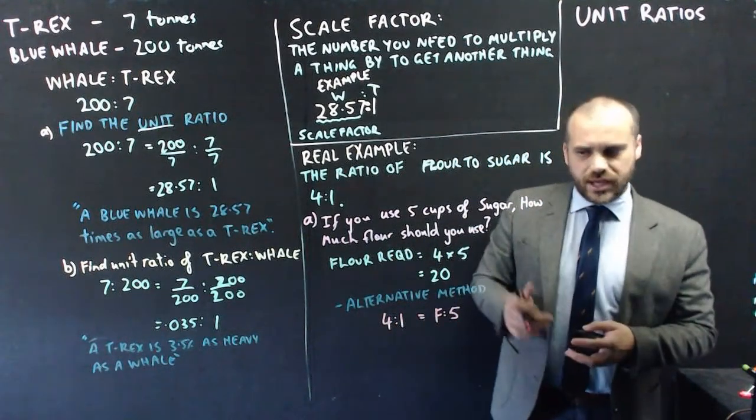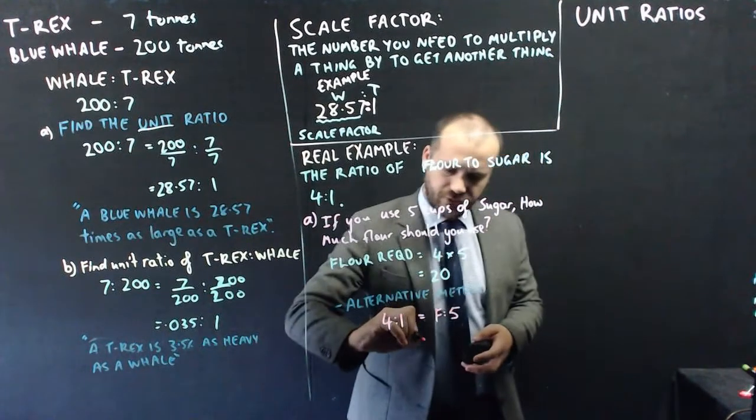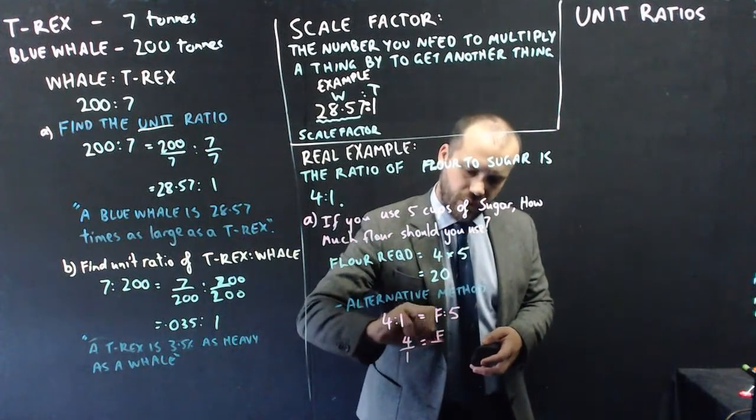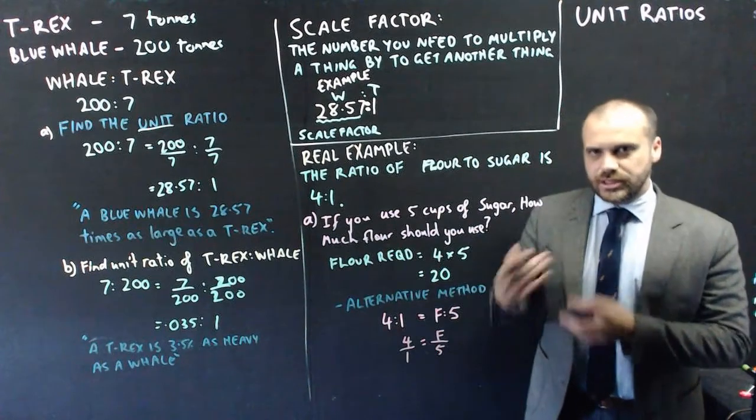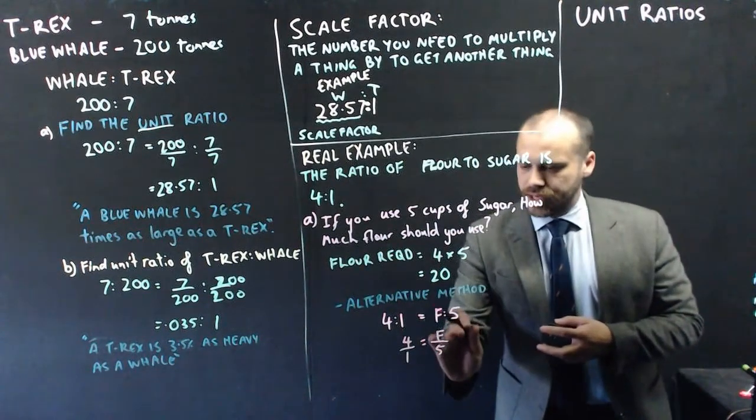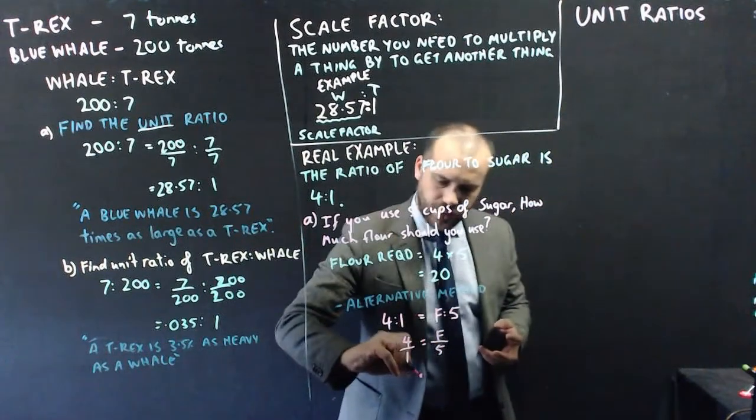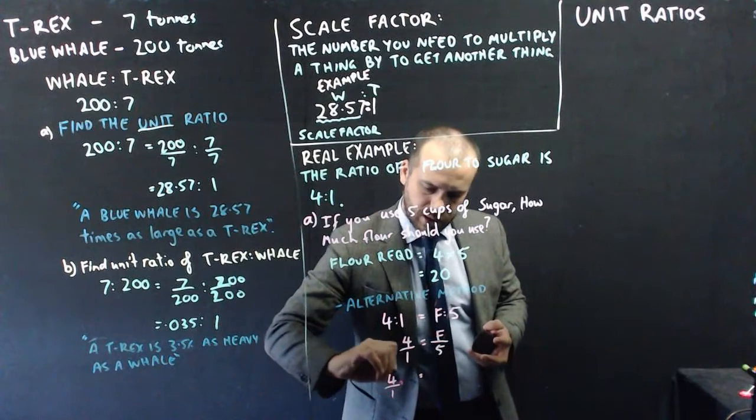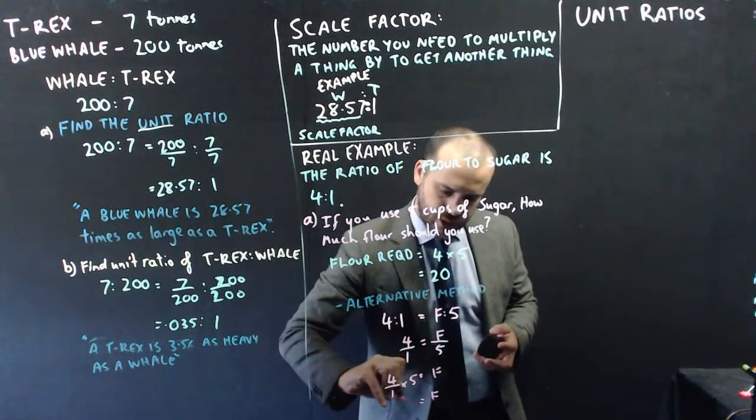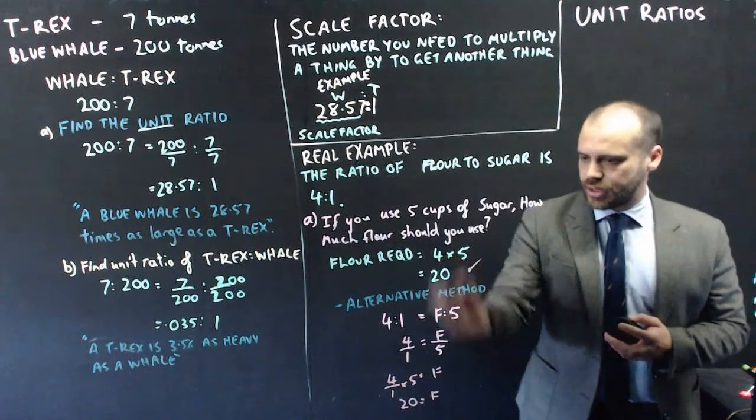4 is to 1 is equal to F is to 5. And we just need to find out what F is. Now, that looks a little bit difficult, but once we write it as fractions, 4 over 1, F over 5, we can start to use a little bit of algebra to figure out what F is. If we want to get F by itself, we multiply both sides by 5. We get 4 over 1 times 5 equals F, which means that F equals 20, which is the same answer that we got up here.